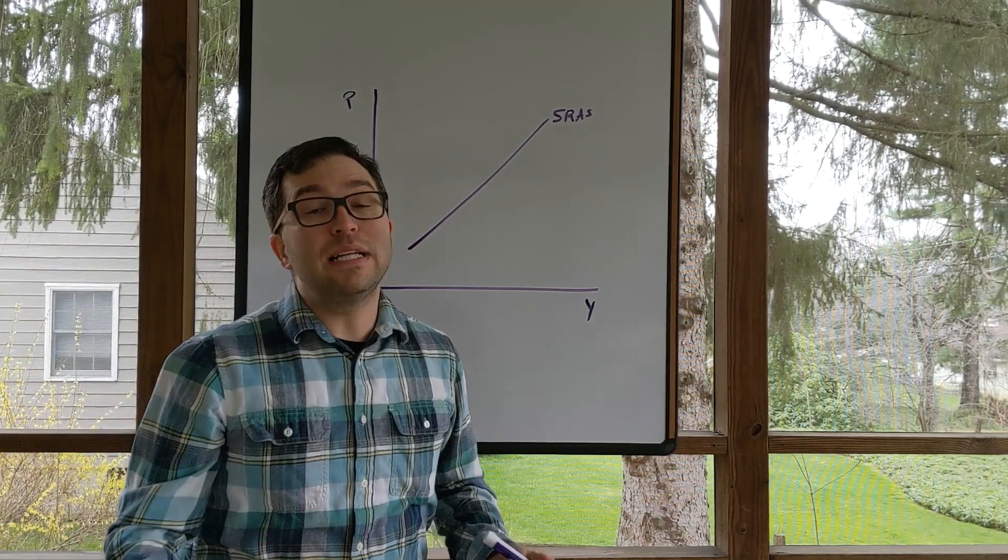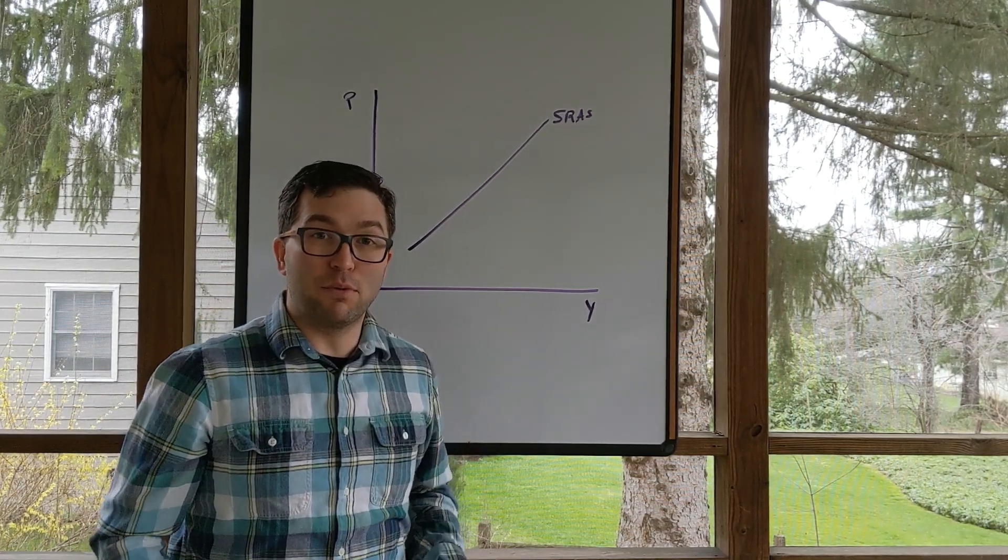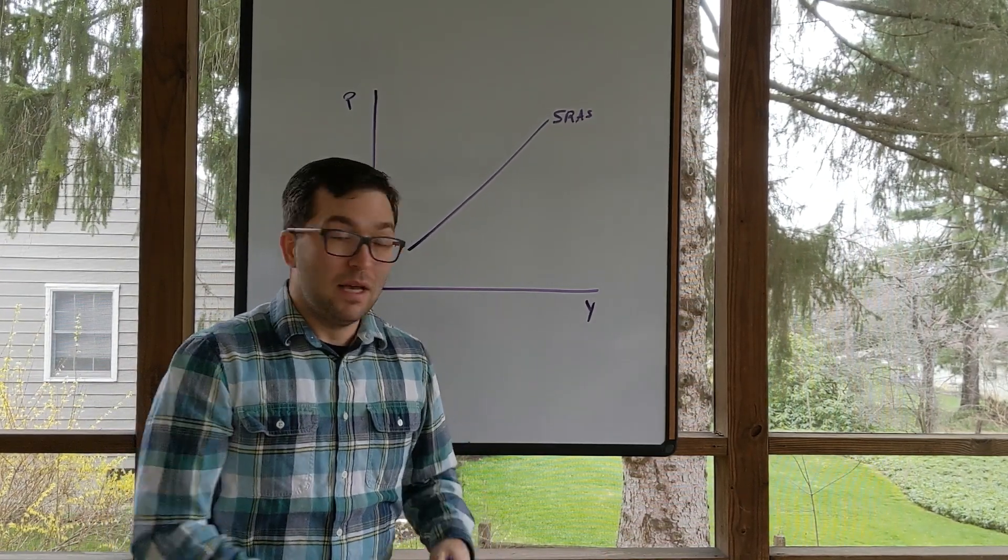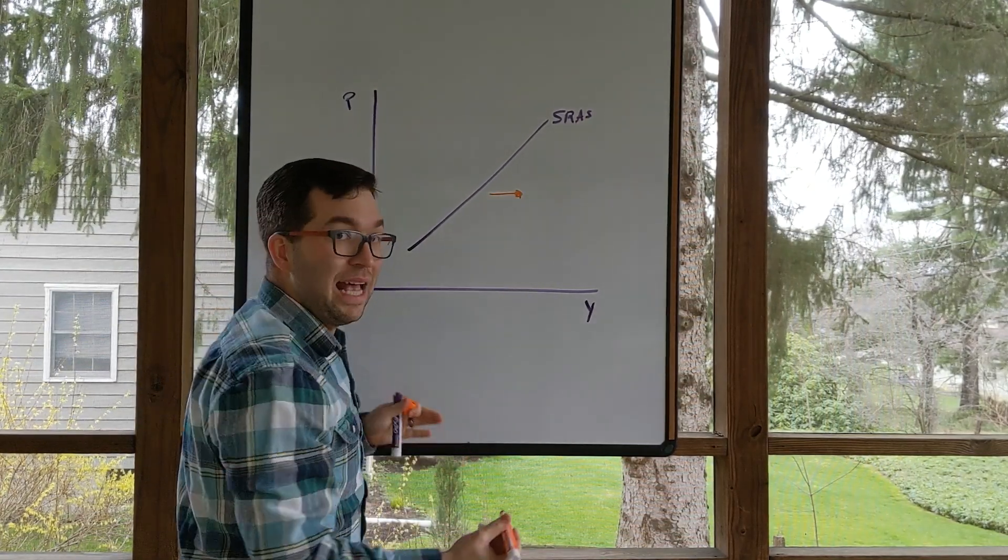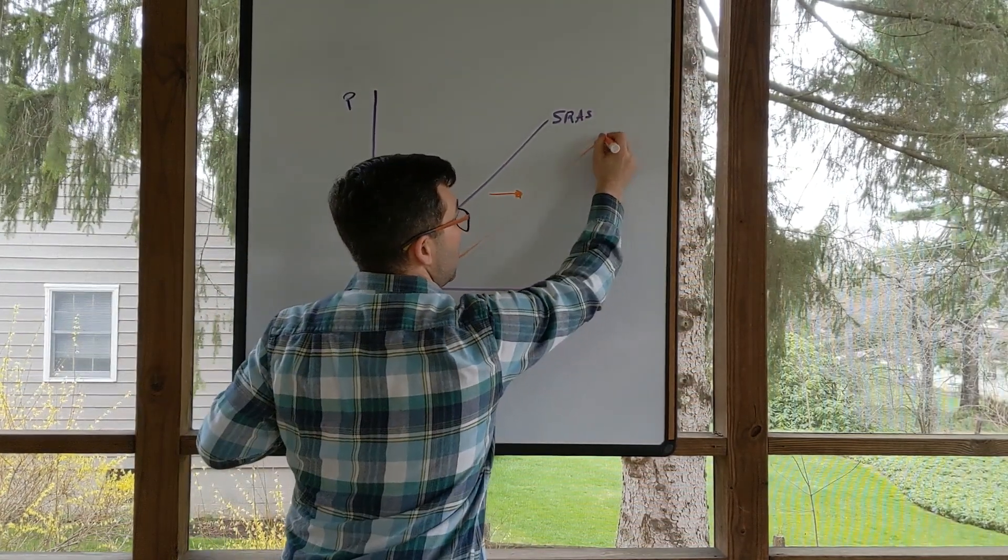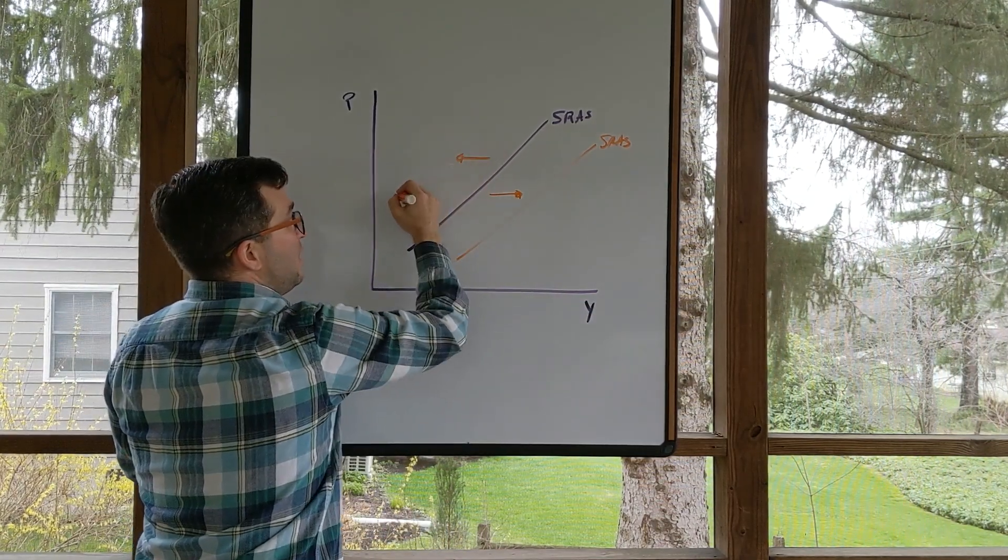As always, we can see shifts, because perhaps the prices are staying the exact same, but in the short run, I'm willing to produce more or produce less. A rightward shift is an increase, as always. A leftward shift is a decrease.